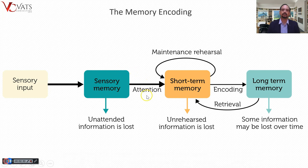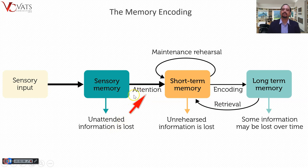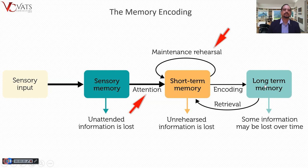Now, attention is the important word here. In the overall memory encoding process, you need to remember only two important terminologies. The first is attention. Information from sensory organs reaches sensory memory where it exists for only a few milliseconds - if attention is not paid, the information is lost. If we pay attention to sensory memory it becomes short-term memory, which lasts only five to seven seconds. The second key term is rehearsal. Once in short-term memory, if rehearsal is done, that information goes into long-term memory. So to encode a memory, we need to pay attention and rehearse.